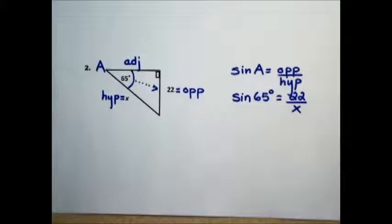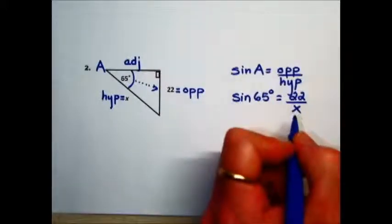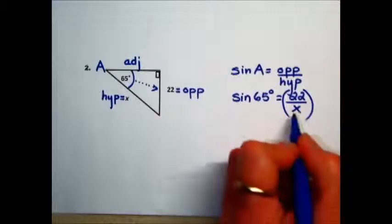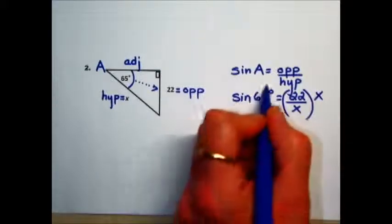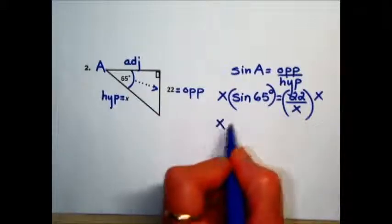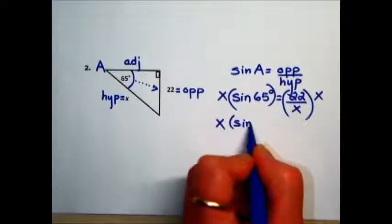To solve this equation for x, we want to eliminate that variable in the denominator. To undo that, we will multiply both sides by the denominator value.